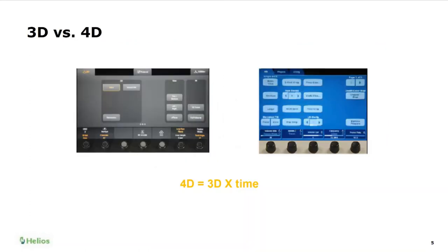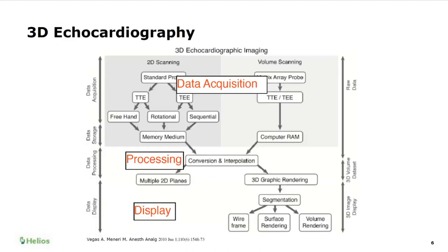One thing I always find funny and a bit confusing is that when we talk about 3D we all agree it's 3D, but then if you go to some platforms and look for a 3D button, there's no 3D button. The only button you find is 4D. Some vendors call it 4D, meaning there is a 3D image that moves over time.